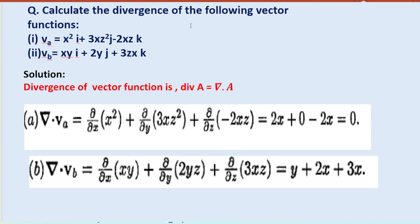Here is an example of computing divergence in Cartesian coordinates. If vector Va = x² î + 3xz² ĵ − 2xz k̂, we take the dot product with ∇: ∇ · Va = ∂(x²)/∂x + ∂(3xz²)/∂y + ∂(−2xz)/∂z = 2x + 0 − 2x = 0. So the divergence of this vector is zero. This is how divergence is computed by taking the dot product with del.